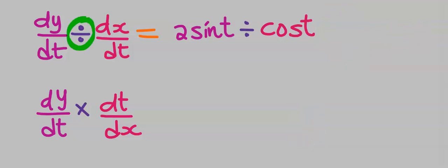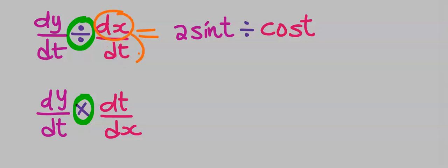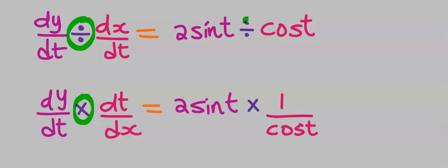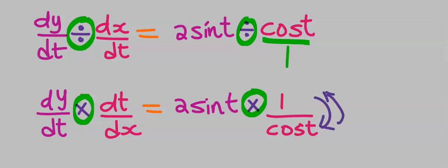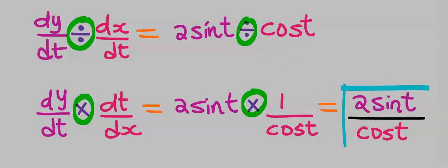Next, let's change the division to a multiplication sign, so the dt will move up while the dx will flip down. This happens to the right-hand side whenever a division is changed to a multiplication sign. Likewise, this term is divided by 1, hence it is going to flip. We now have 2sin(t)cos(t) as our answer.